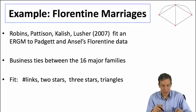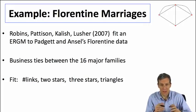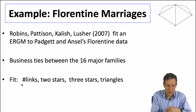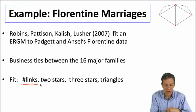This is a paper by Robbins, Pattison, Kalish, and Lusher, 2007. They're fitting an exponential random graph model to the data of Padgett and Ansell, looking in particular at the business ties between the 16 major families. What they're going to do is look at how many links are present in the network, how many two stars, how many three stars. Links, it's easy. Two stars, that's going to be shapes that look like this.